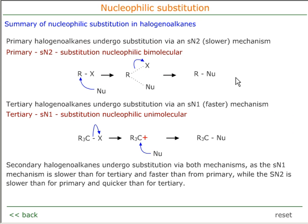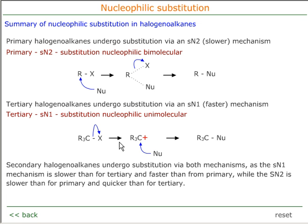As a summary: primary haloalkanes undergo SN2 — substitution nucleophilic bimolecular — meaning the particles must collide in the rate-determining step. Tertiary haloalkanes go via SN1, which is generally a faster mechanism because the activation energy to reach the intermediate is less. SN1 requires dissociation of the haloalkane to produce a carbonium ion, which is then attacked by a nucleophile. Secondary haloalkanes undergo substitution via both mechanisms.